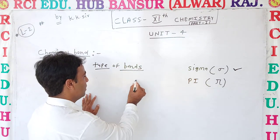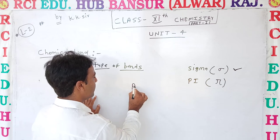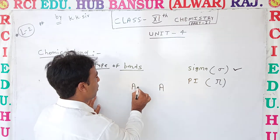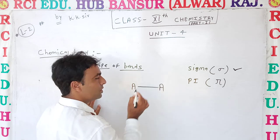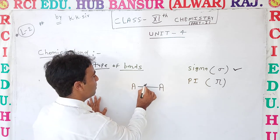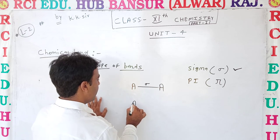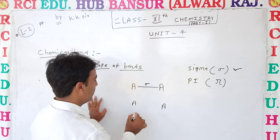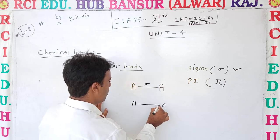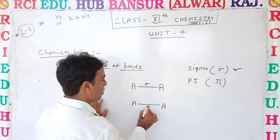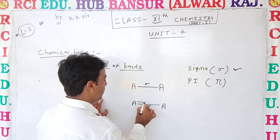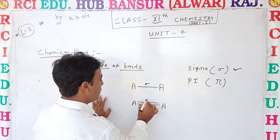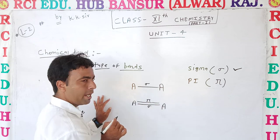For example, between atom A and another atom A, when one bond forms, that is called a sigma bond. If we draw two lines between A and A, the second line is a pi bond.